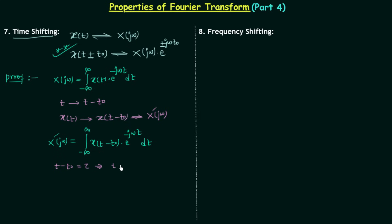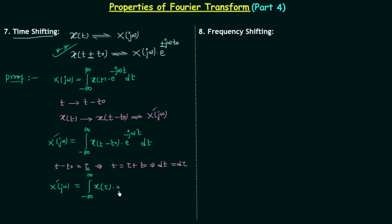Now we substitute t − t0 = τ, which implies t = τ + t0. The range of integration remains the same: when t equals minus infinity, τ equals minus infinity, because t0 is a very small value compared to infinity. So the limits are unchanged. Writing the new Fourier transform with the substitution, x(t − t0) becomes x(τ), and in place of t we write τ + t0, and dt becomes dτ.